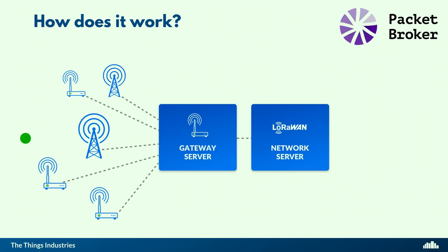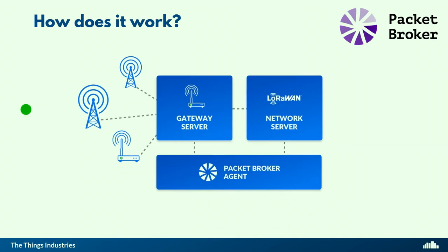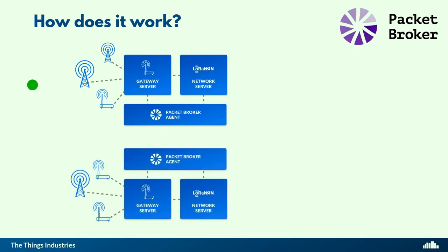So let's focus on the gateway server and network server. The application server is still there, but it doesn't really matter for the rest of the presentation. What matters is that we add a Packet Broker agent — a client component that runs in your network and interacts with a Packet Broker. Packet Broker agents will become part of the Things Stack, open source as well. And if you have another network that also has Packet Broker agents, they can start exchanging traffic with each other.